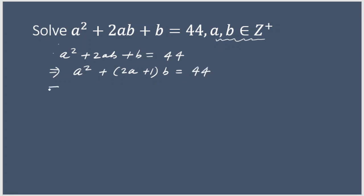Now if I look at this term a², it looks like I want to somehow make a common factor of (2a + 1). So I multiply the whole thing by 2 again. I get 2a² + 2(2a + 1)b = 88.